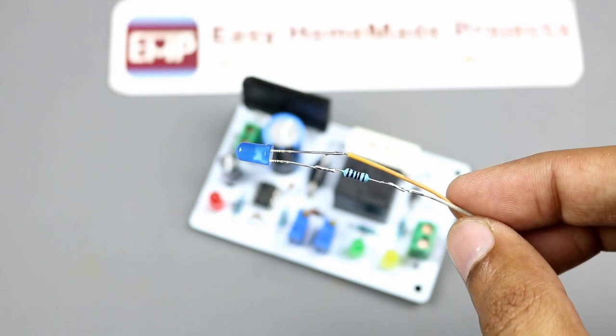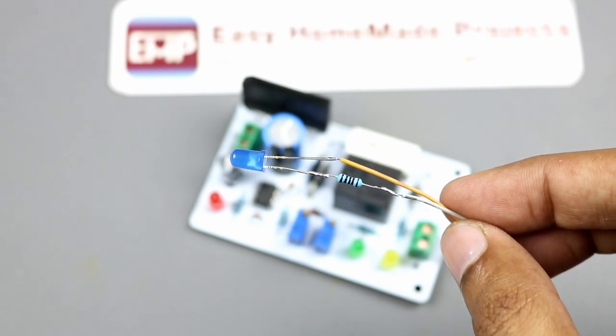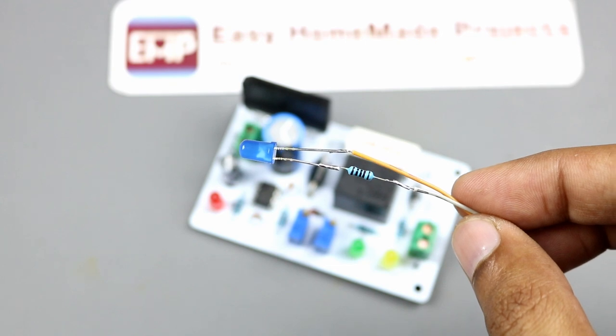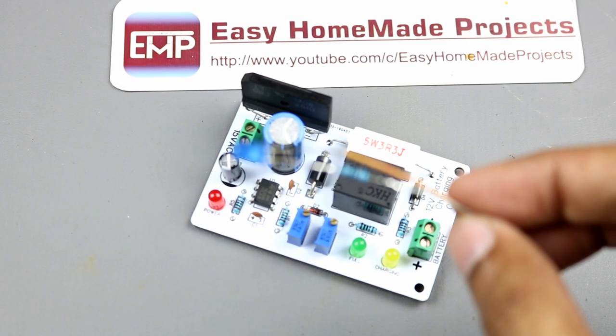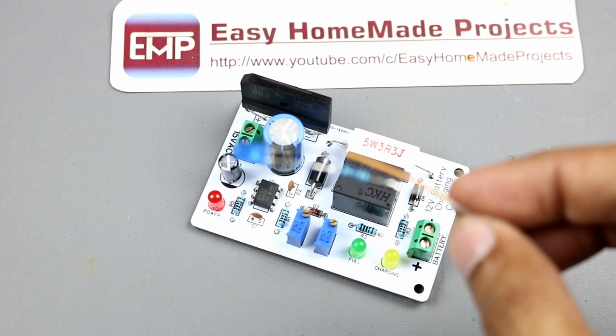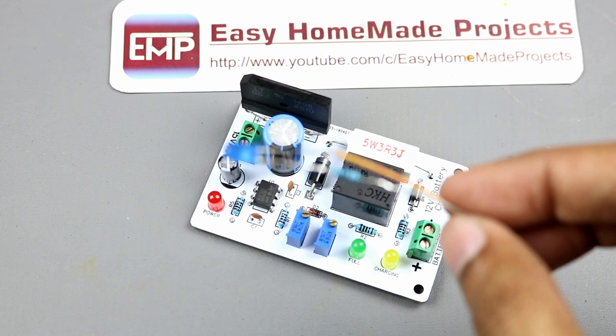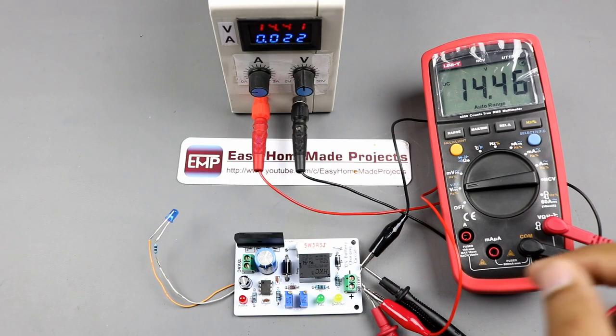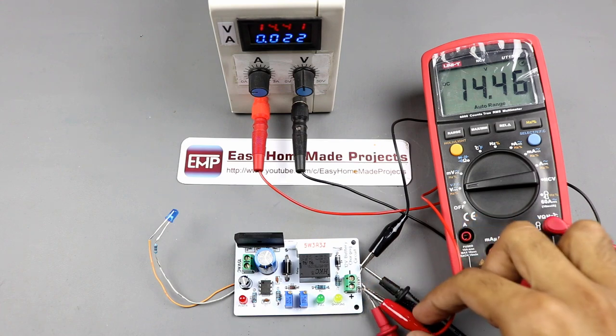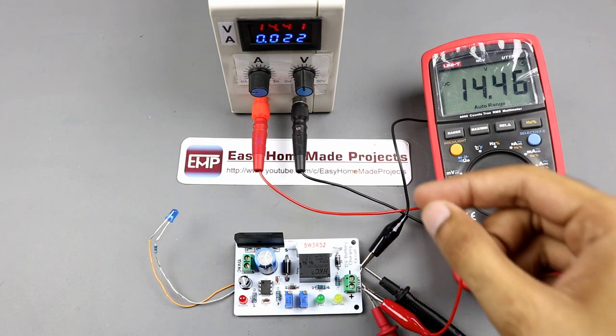To calibrate the circuit we will need an LED with 1kohm resistor in series. Connect the positive wire of LED to the pin number 3 of IC and the negative wire of LED to the ground terminal of the circuit. Now connect the variable DC power supply to the battery terminals of the circuit and set the voltages at 13V.